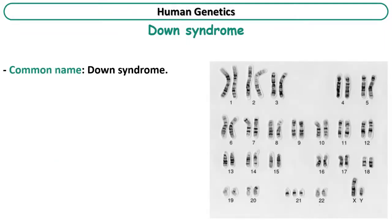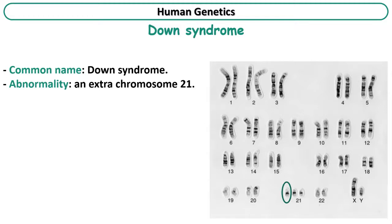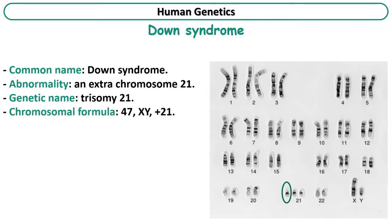Let's start with Down syndrome. The karyotype shows that there are three chromosomes 21 instead of two, which means that the abnormality is an extra chromosome 21. The genetic name is trisomy 21, where the term trisomy means three chromosomes. To write the chromosomal formula of this individual: first, we count the chromosomes and write the total number, which is 47; second, we write the sex chromosomes, which are XY in this karyotype; and finally, we mention the abnormality, which is an extra chromosome 21.